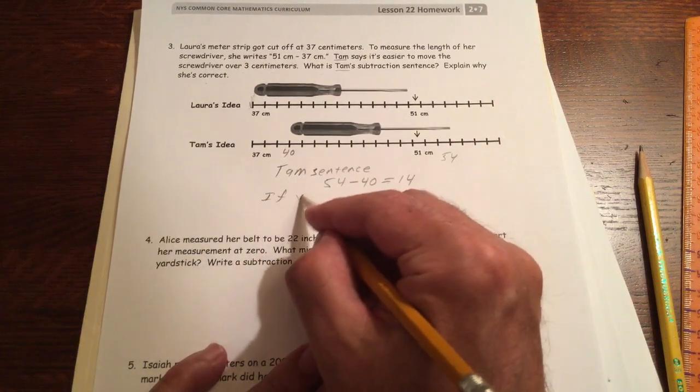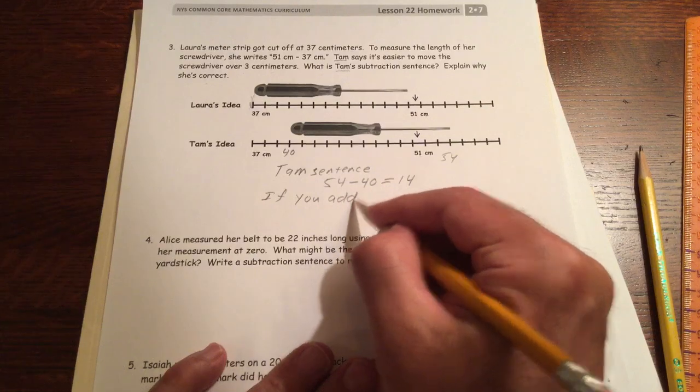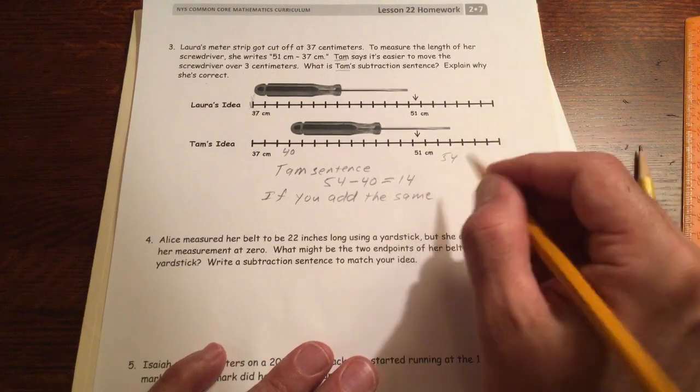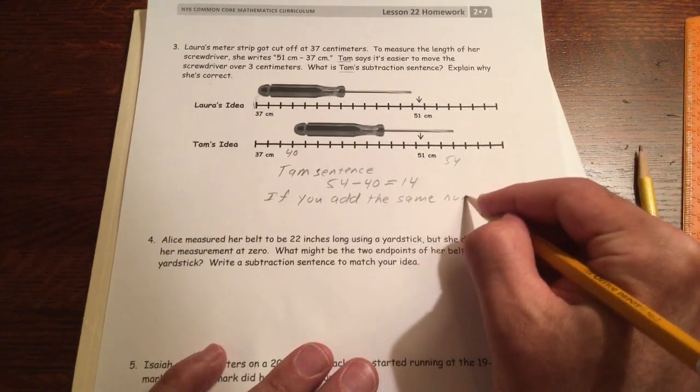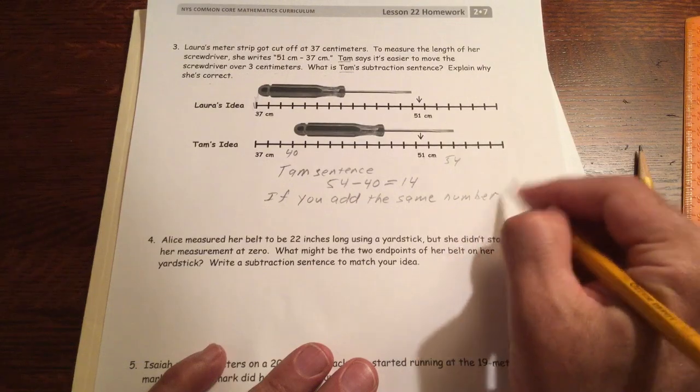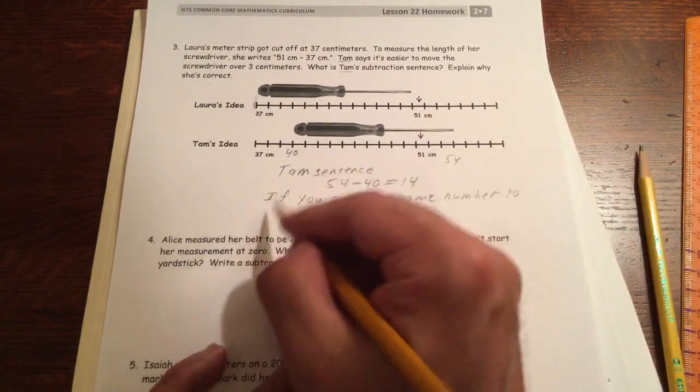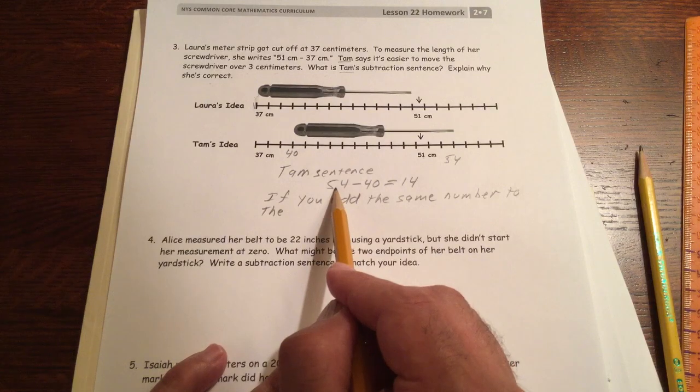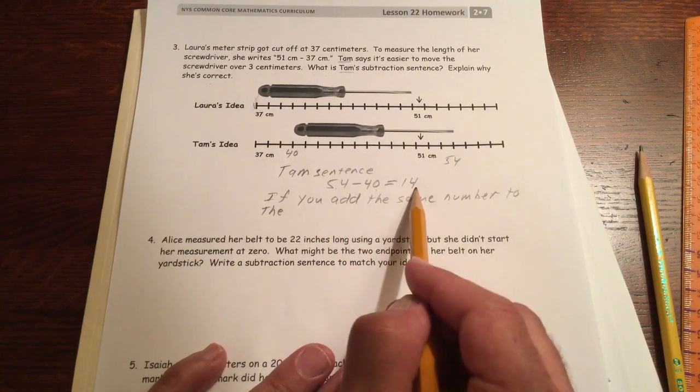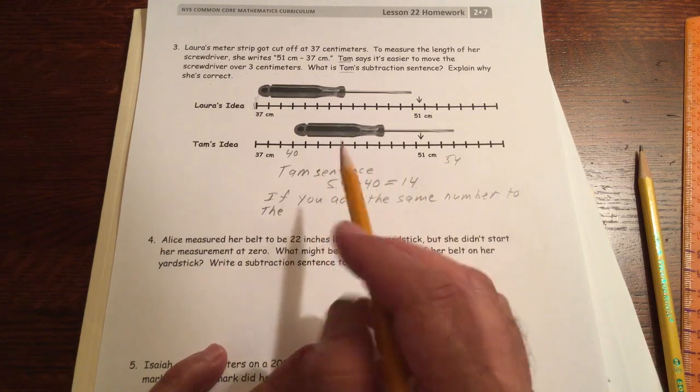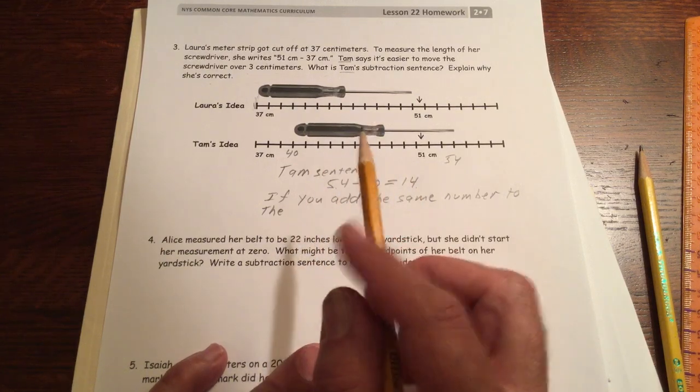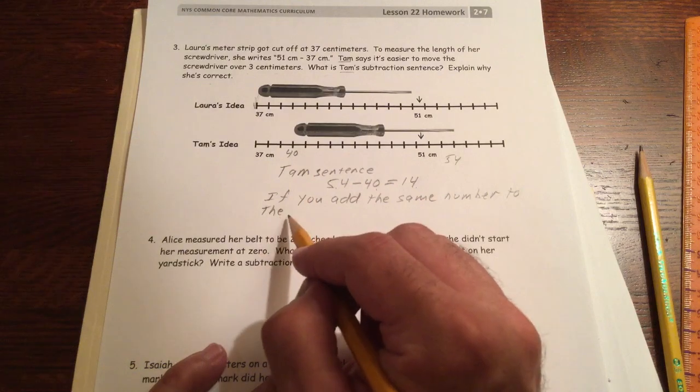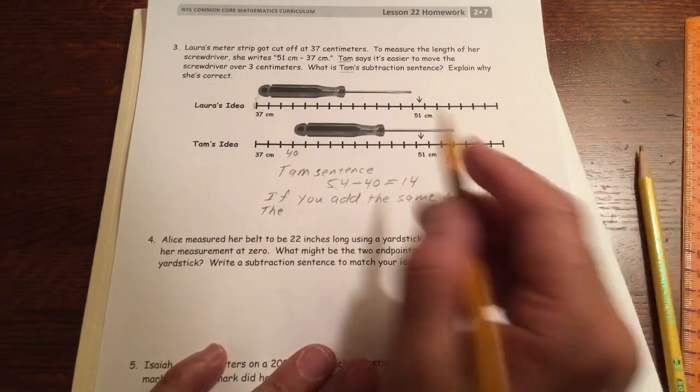If you add the same number to... And if we're going to use some math vocabulary, that would be the minuend. And that's the subtrahend and that's the difference. So as long as you add the same number to the minuend and the subtrahend, or you could just say to both numbers.